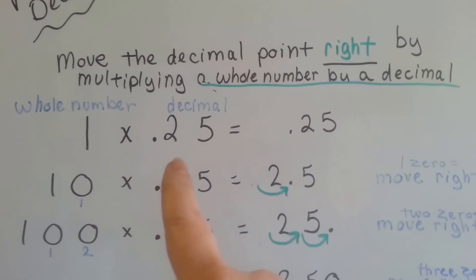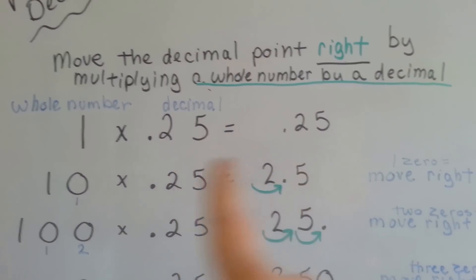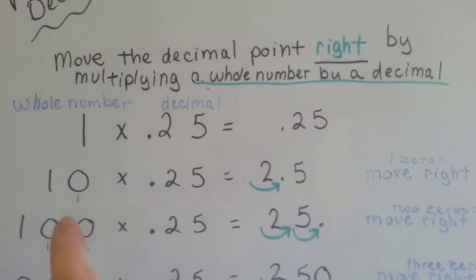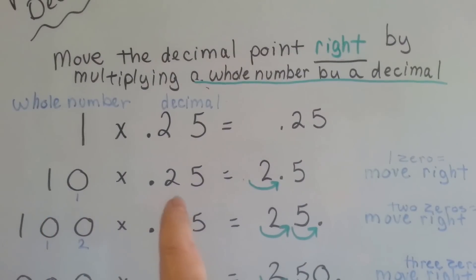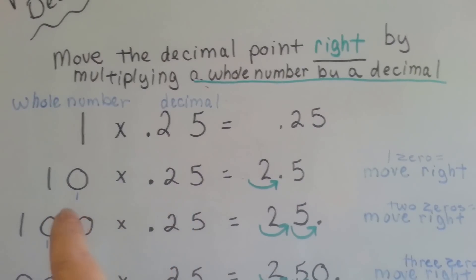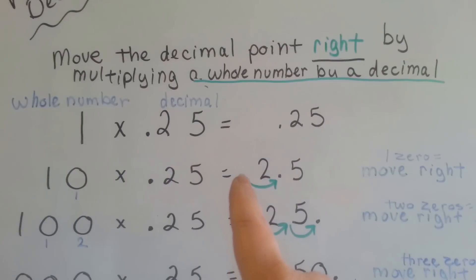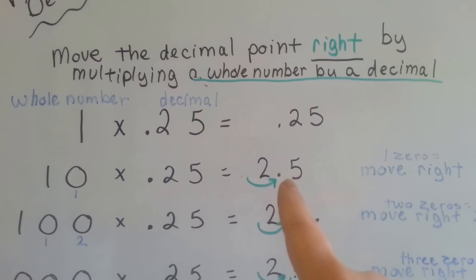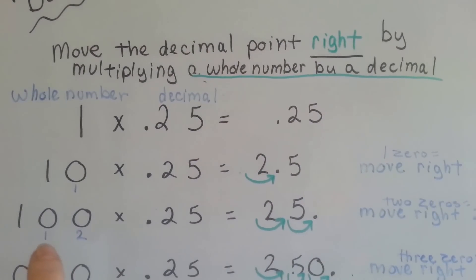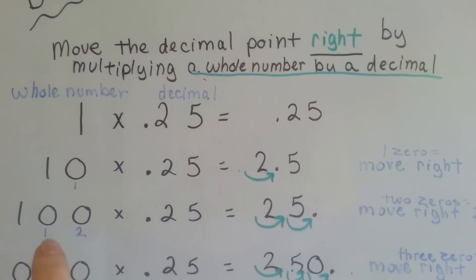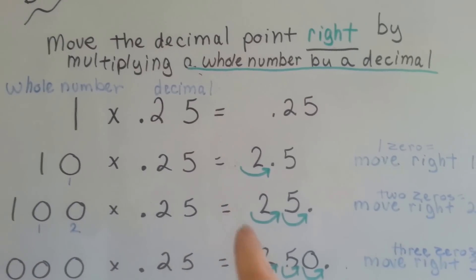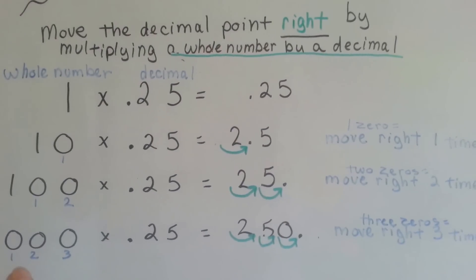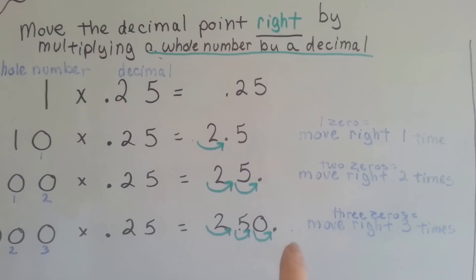One times twenty-five hundredths is going to stay twenty-five hundredths, because anything times one stays the same. When we have ten times twenty-five hundredths, because there's one zero, we move the decimal place one place to the right. When we multiply by a hundred, there are two zeros, so we move it two times over. See the pattern? When there are three zeros, we move it three times over.